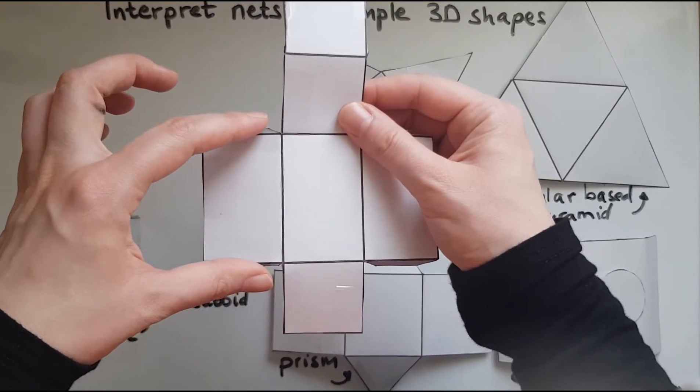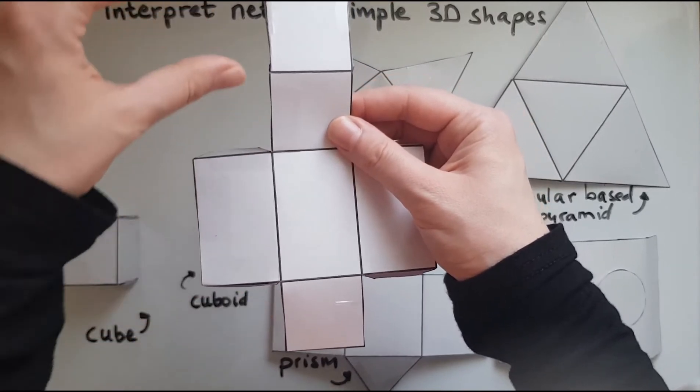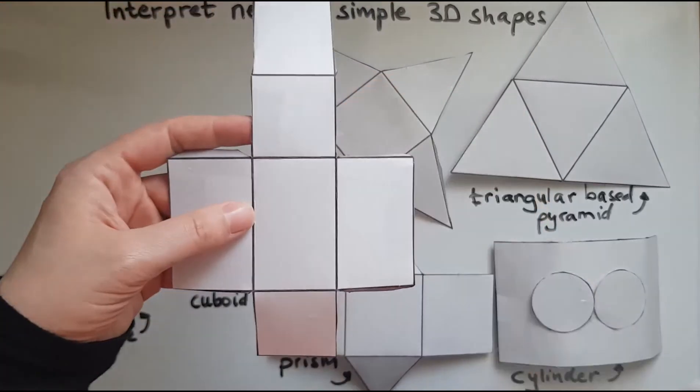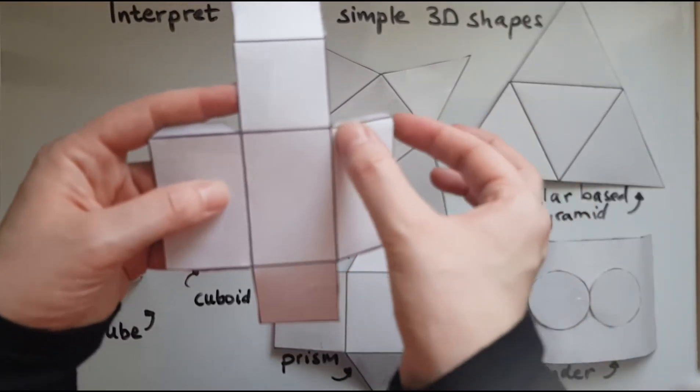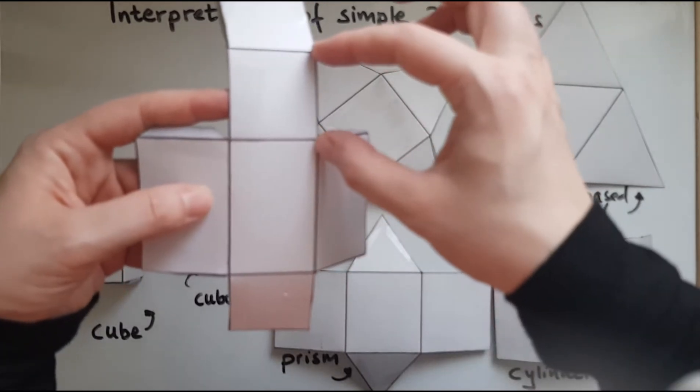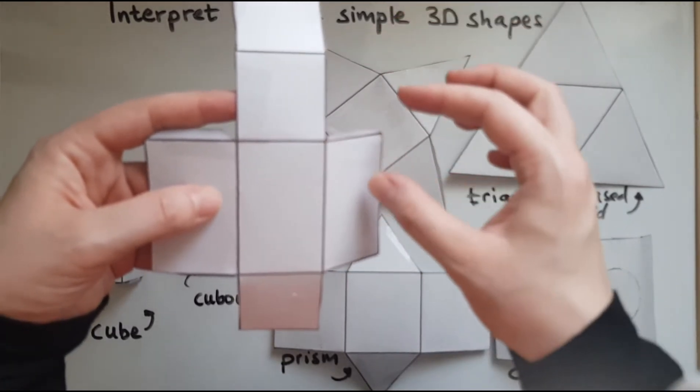And I could do the same with this face. Rather than have it here, I could have it over here. Can I cut this off and turn it around so that this would fit in there? I could do that as well.